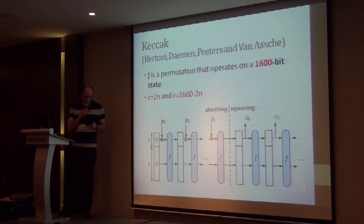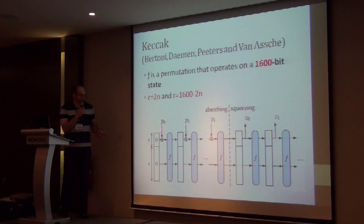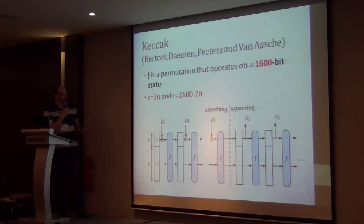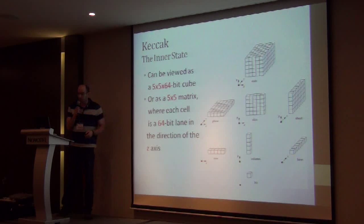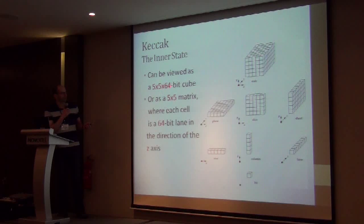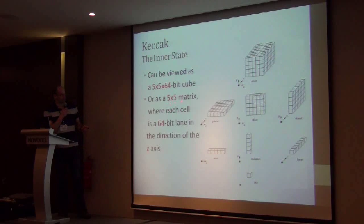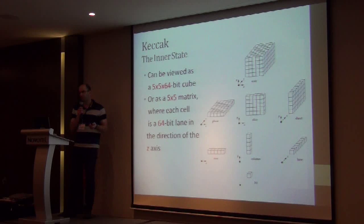In the case of Keccak, F is a permutation that works on a state of 1600 bits. The value of C is equal to 2N, which leaves R to be 1600 minus 2N. The internal state of Keccak is 1600 bits and can be viewed as a 5-by-5-by-64 bit cube. We will usually use another representation as a 5-by-5 matrix where each cell is a lane of 64 bits, in the direction of the Z axis.